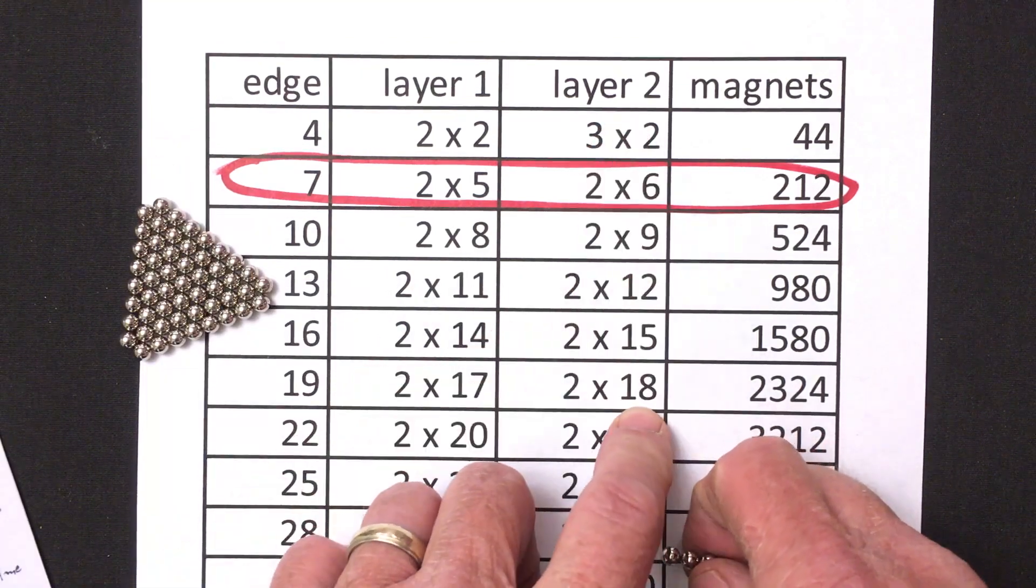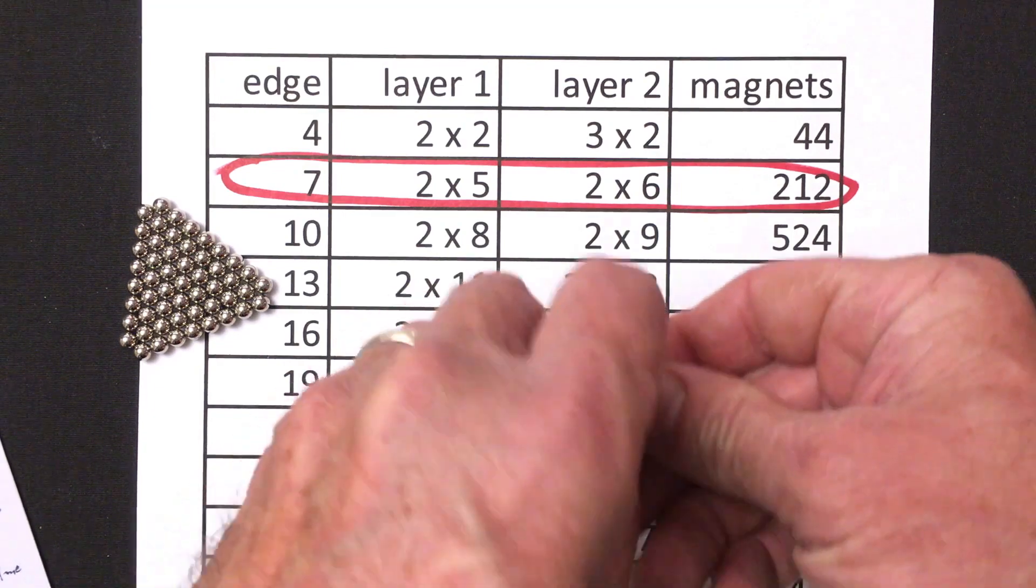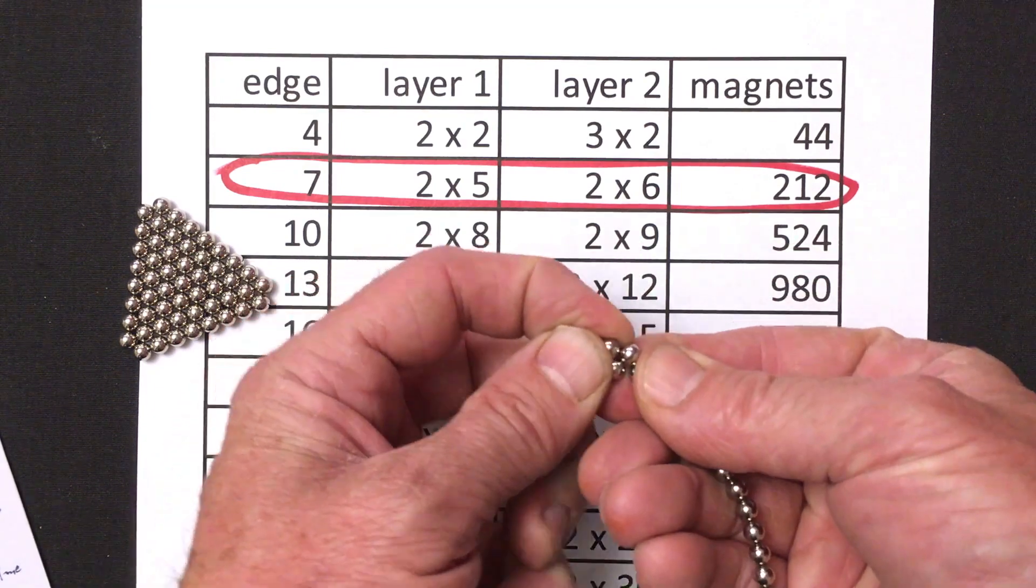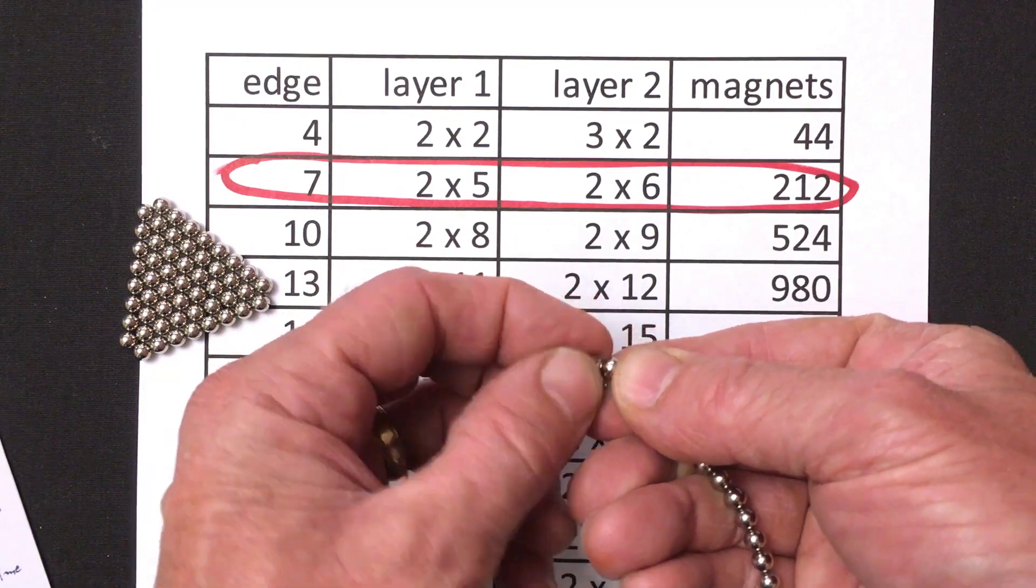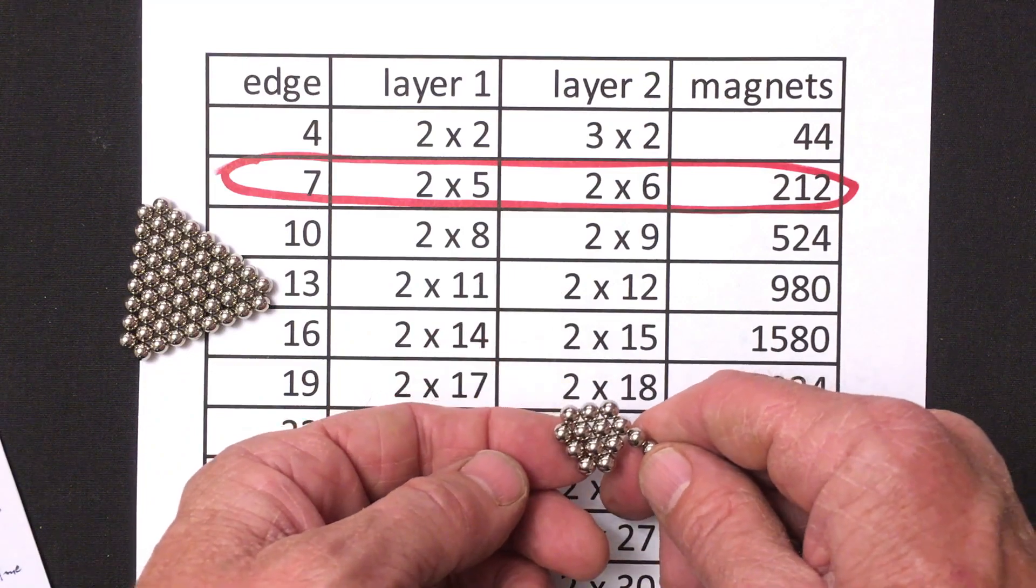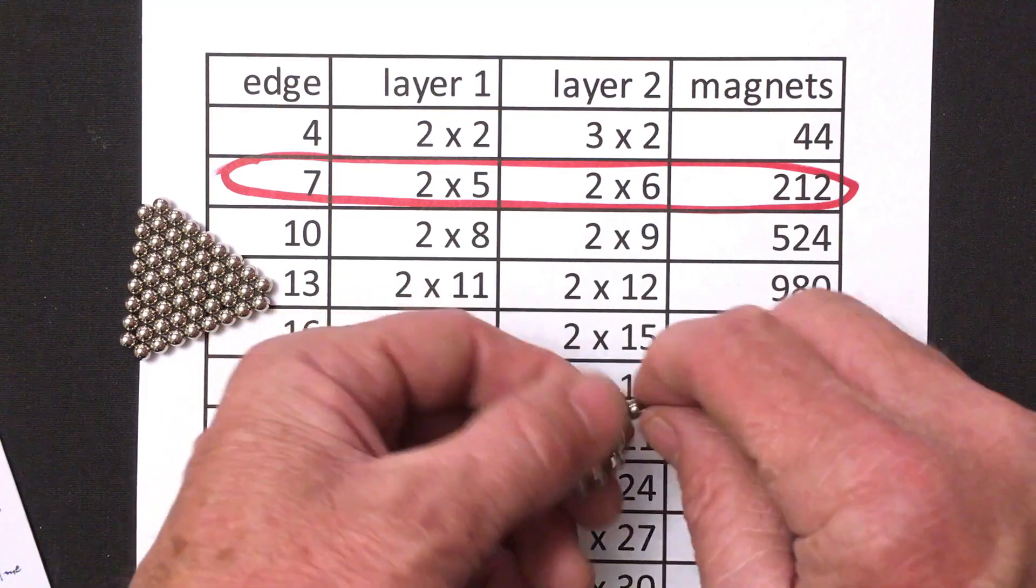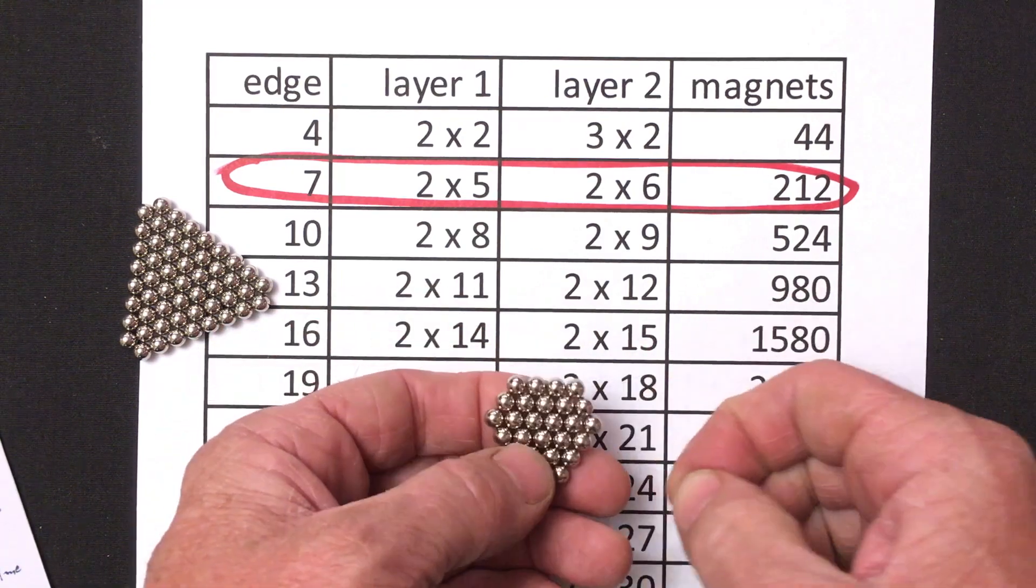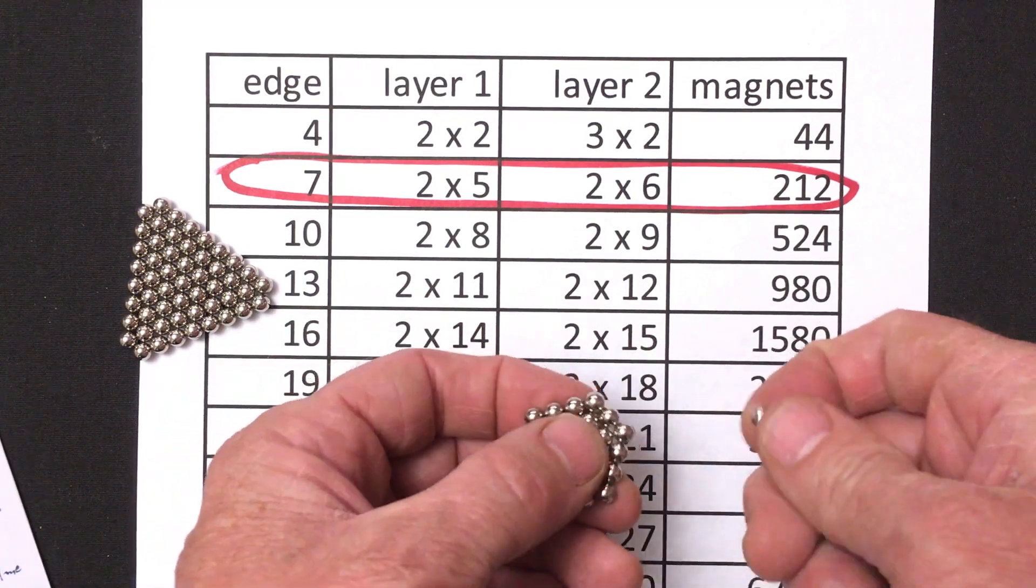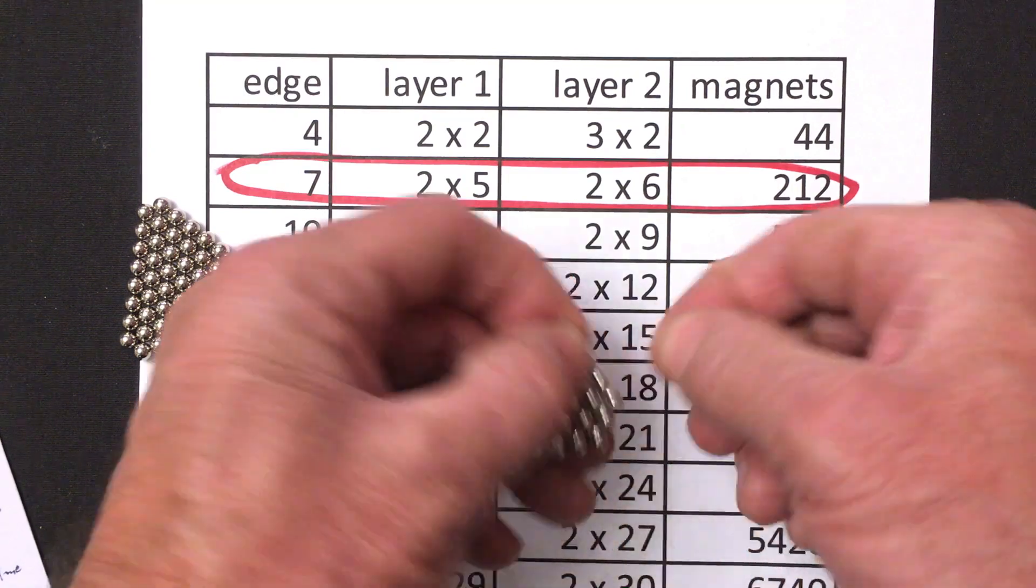We also need a 2 by 9. This layer, layer two, always starts off with a 3 magnet triangle. This starting point like we did for edge count seven. Wind another ring around that. Wind a ring around that. Then another ring around that. And add two magnets to each of the short sides.